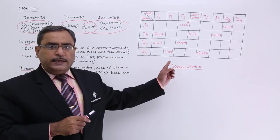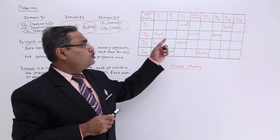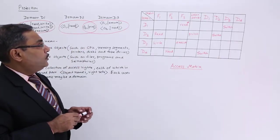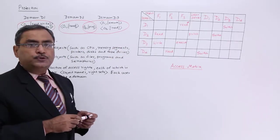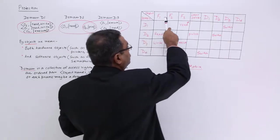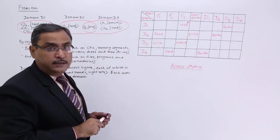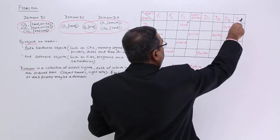This thing can also be represented in a tabular form, this thing can also be represented in a tabular form. So, here across the rows we have put the domains, here across the columns we have put the objects and obviously, here we are having the domain again.